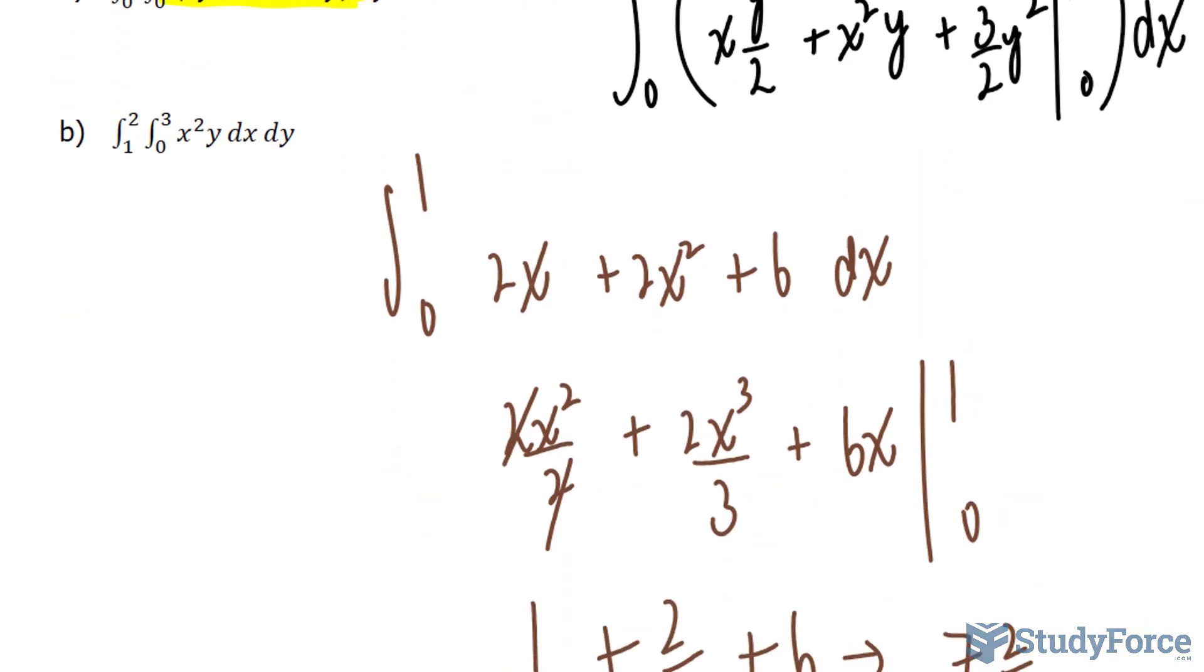Let's use the same method for question B. We'll start with the inside, and we'll take the integral with respect to x. So the integral of this term with respect to x is x to the power of 3 over 3, holding y constant. We'll evaluate this at 3 and 0. You don't have to worry about the 0 part because it will become 0.